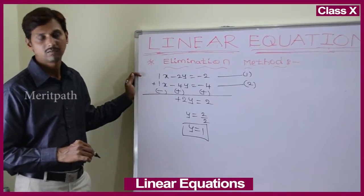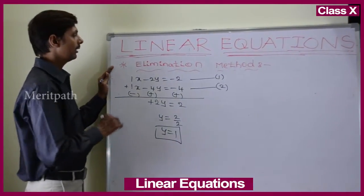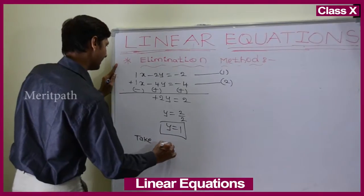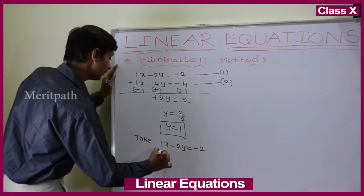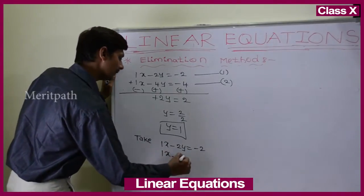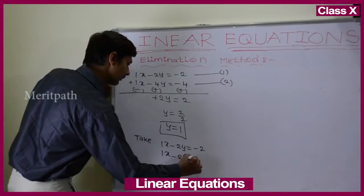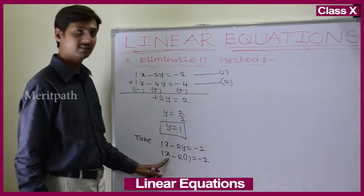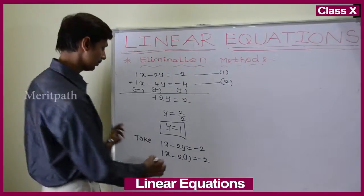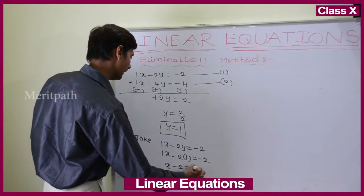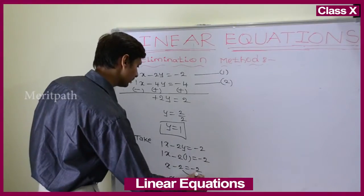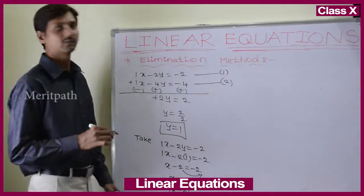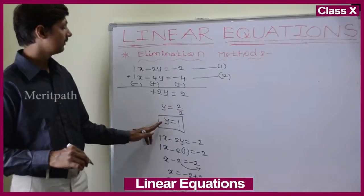Using the elimination method we found y equals 1. Now we substitute y into the first equation: x minus 2y equals minus 2. Substituting y equals 1: x minus 2 equals minus 2. Transposing minus 2 becomes plus 2, so x equals minus 2 plus 2, which gives x equals 0.